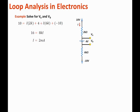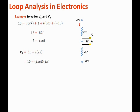Now that we know I, we can solve for VA using Ohm's law, which says that VA equals the voltage at the top minus the voltage drop across the 2k ohm resistor. So VA equals 10 minus I times 2k. Substituting I as 2 milliamps, that gives 10 minus 2 milliamps times 2k, which is 6 volts.